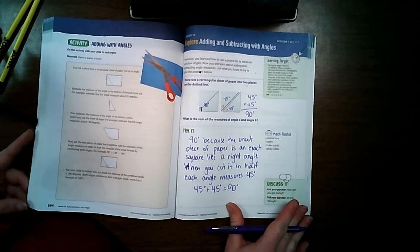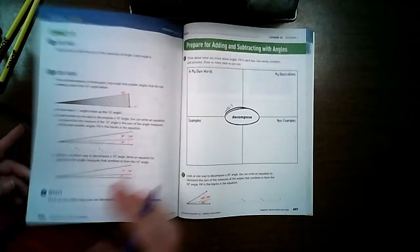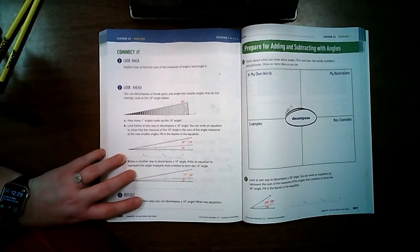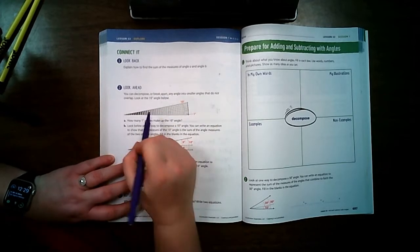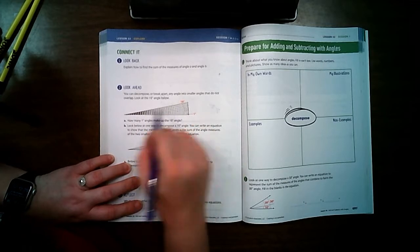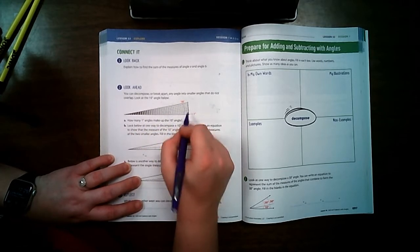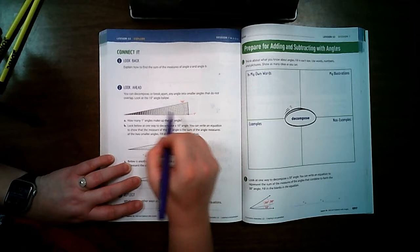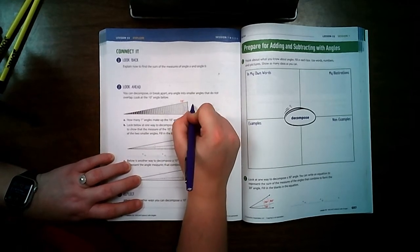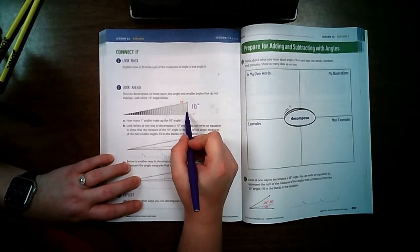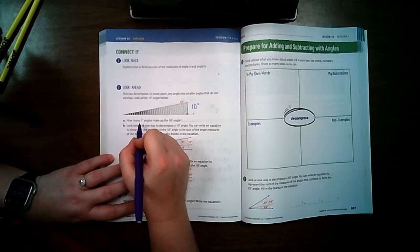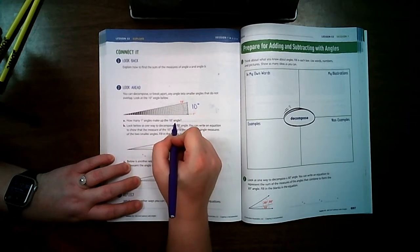Let's go ahead and take a look at page 696. We already answered number one, so let's take a look at number two. This is a piece of a circle that they decomposed or kind of blew up and it made it bigger, kind of like a magnifying glass. It says that it's 10 degrees. So this angle is altogether worth 10 degrees and each space between each set of lines is worth 1 degree. It says how many 1 degree angles make up the 10 degree angles?